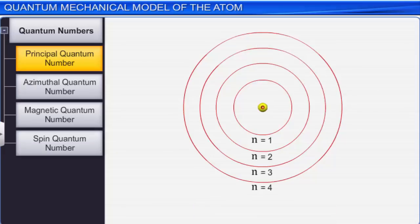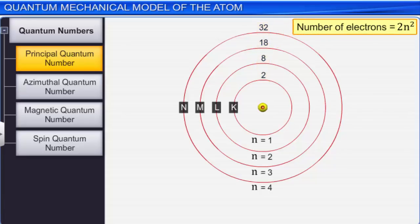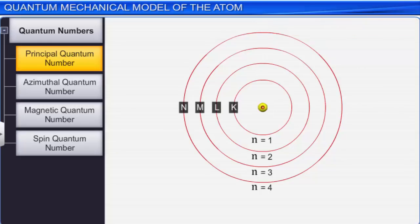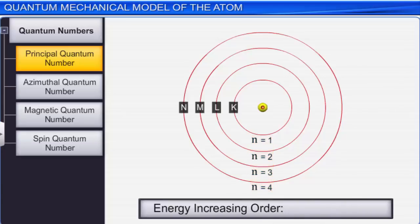Shells are denoted by the capital letters K, L, M, N, and so on for the values of n equal to 1, 2, 3, 4, and so on respectively. The number of electrons in a shell is given by 2n². Therefore, for n = 1, there will be 2 electrons in the K shell, and for n = 2, there will be 8 electrons in the L shell. The number of electrons in M and N shells will be 18 and 32 respectively. As the energy increases with the increase in n, the energies of the various shells follow the sequence: K < L < M < N and so on.